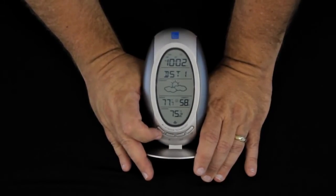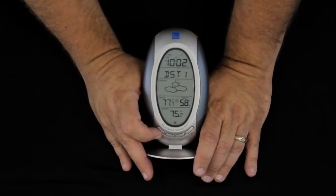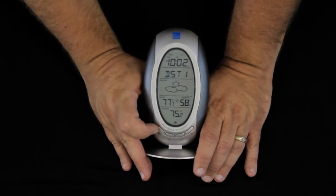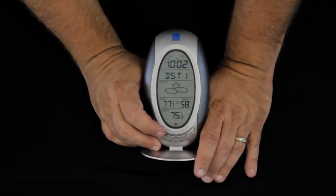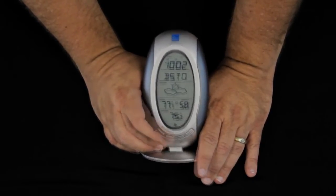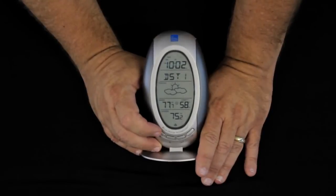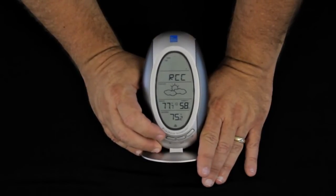DST stands for daylight savings time. DST1 means that the clock will look for a daylight savings time signal and adjust to it. If you live in an area without DST, you turn that off. We'll leave it turned on.